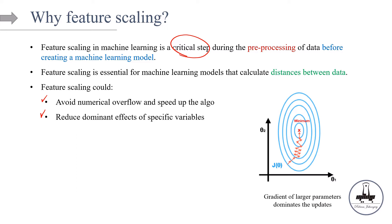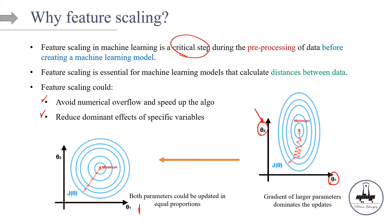Imagine the loss function versus two parameters of the model. The gradients of larger parameters dominate the updates. With different ranges for each feature — and therefore different ranges for the parameters — the contours may be extremely skinny, making gradient descent suffer from extremely slow convergence. By scaling or normalizing the parameters, we ensure both parameters are updated in equal proportions, and the path to the optimum becomes much smoother.